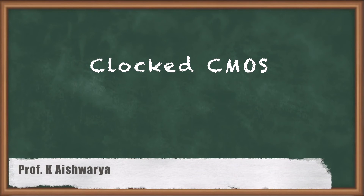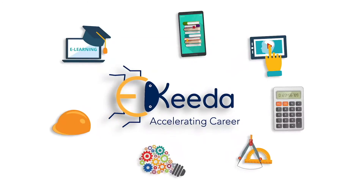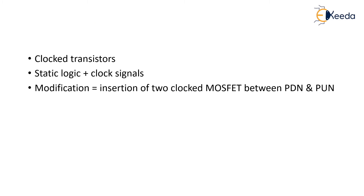Hello students, in this video we are going to learn about clocked CMOS logic style. In our previous video we saw about the problem of cascading dynamic logic and how to overcome the cascading problem by keeping an inverter in between, giving us domino logic. Here we are going to learn a different logic which is called as clocked CMOS logic or C-squared MOS logic.